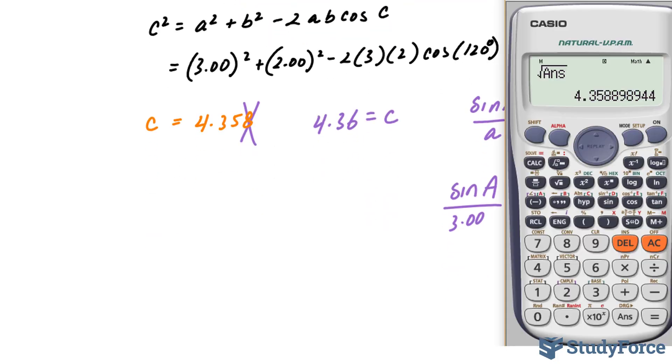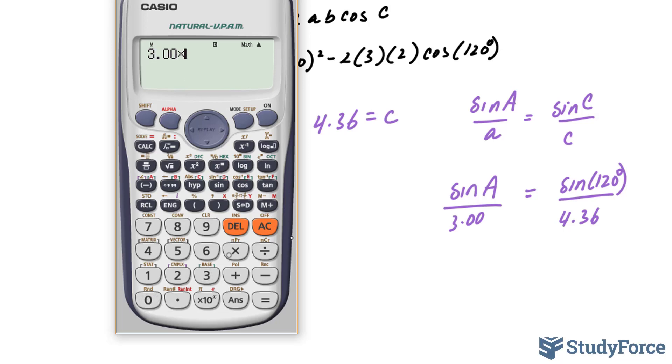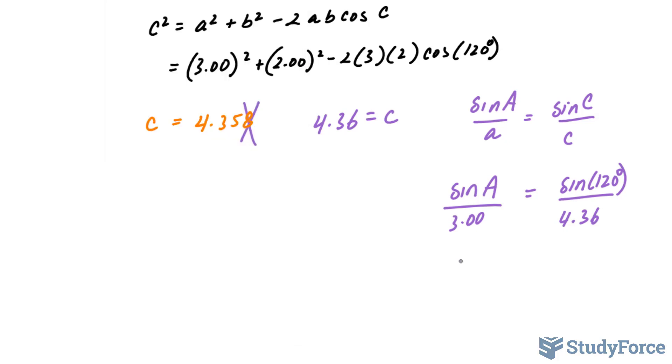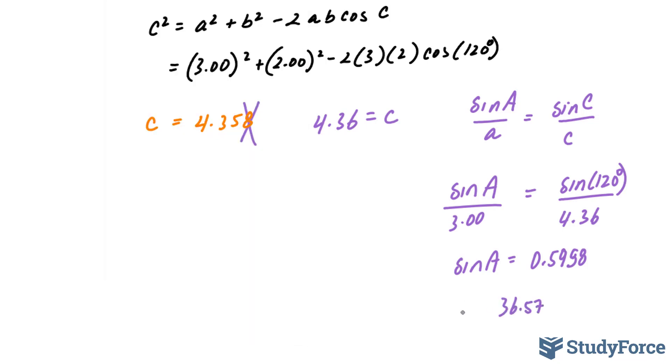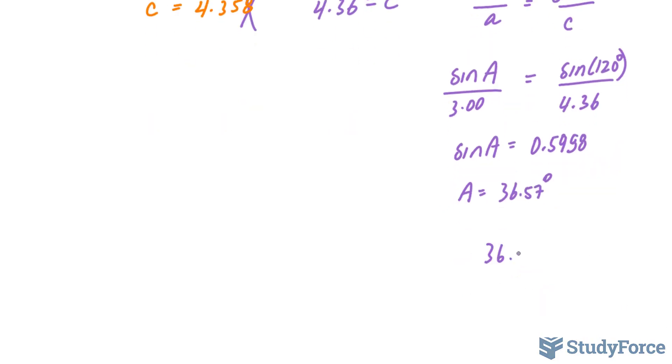Using our calculator once more, multiplying 3.00 times sine of 120, multiplying 4.36 times sine A, which gives us 4.36 sine A. Dividing both sides by 4.36 gives us the following ratio. Sine A equals, and I'll take 4 decimal places to be accurate. I'll sine inverse both sides, where I end up with 36.57. Taking into account three significant figures, I can stop at 36.5, and 7 is greater than 5, so we end up with 36.6.